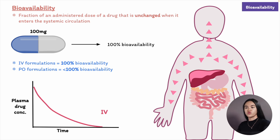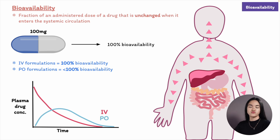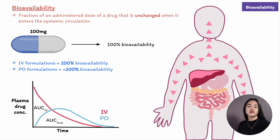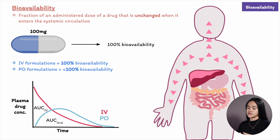We can show the relationship between time and plasma concentration on a graph. A drug given intravenously starts at a concentration of 100%, while oral drugs must be absorbed first and some is eliminated before reaching systemic circulation. We can calculate the area under these curves (AUC) to estimate bioavailability. To estimate bioavailability of an oral drug, divide its AUC by the IV AUC, both corrected by their respective doses.